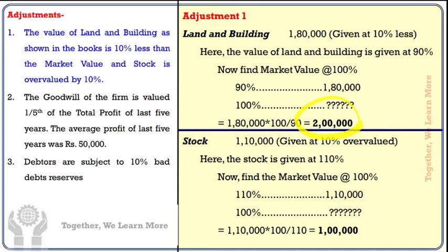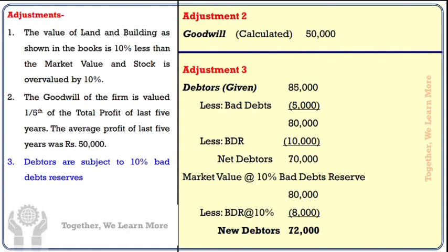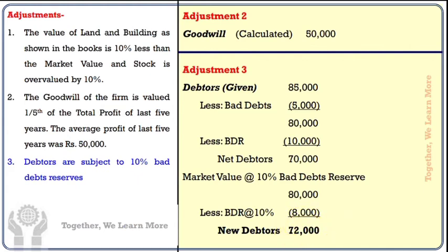So Land and Building: 2 lakh, Stock: 1 lakh — this is Adjustment No. 1. Adjustment No. 2: Goodwill calculated as Rs. 50,000. Adjustment No. 3: Debtors — 85,000 minus 5,000 bad debts minus bad debt reserve 10,000 = net debtors 70,000. Now directly create a 10% bad debt reserve on 80,000, giving new debtors of 72,000, to be included in total assets.